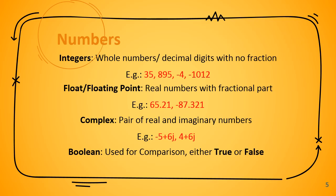Integers are used to represent or store all numbers with no fractional part — that is, whole numbers without any fractions. For example: 35, 895, -4, -1012. Floating point values are real numbers with a fractional part. They are used to store numbers with a decimal component, for example: 65.21 or -87.321.